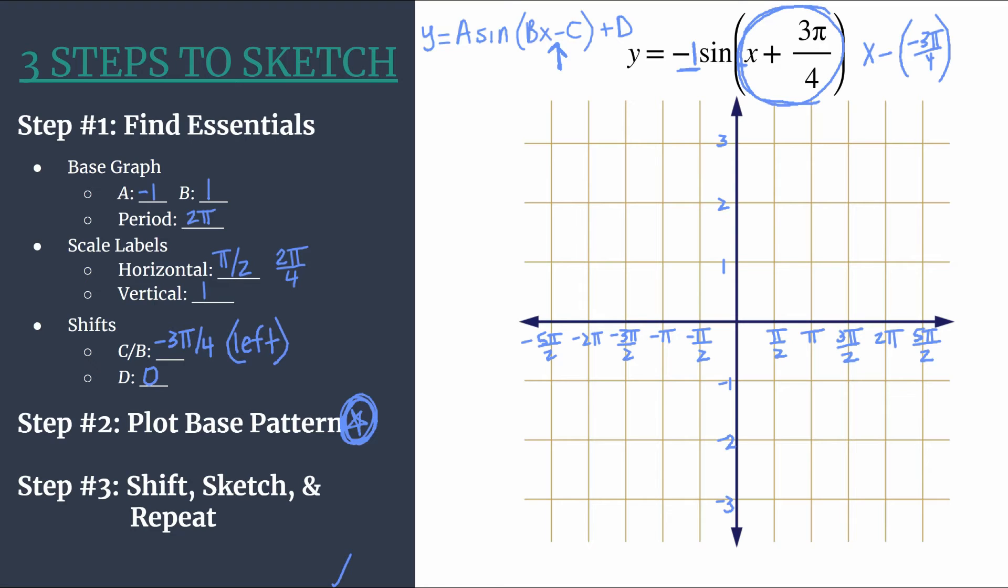Now we are ready for step two: plot the base pattern of sine. And it's here where I'm really glad that I put a star so I could remember there was a negative in front of my sine. That tells me this will be a reflected sine pattern. So our base pattern will be zero, minimum, zero, maximum.